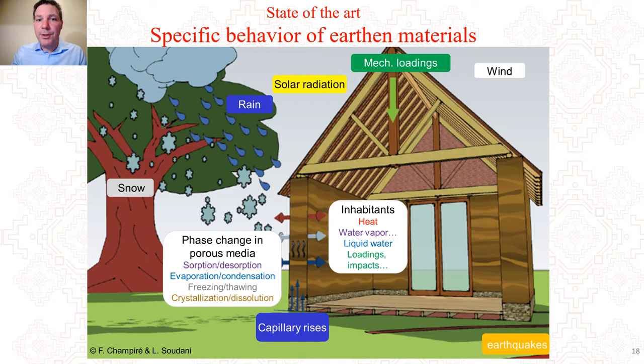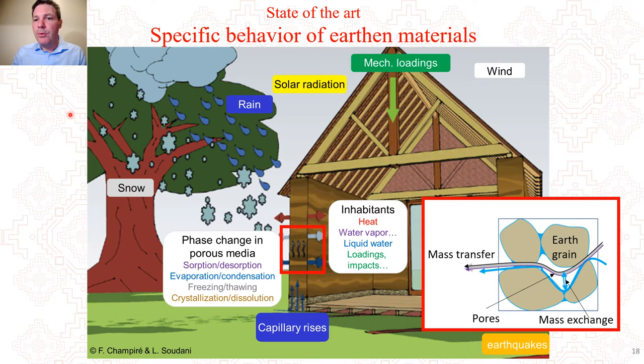The second point is the specific behaviour of earth material. Earth is a porous material with very high permeability due to the network of macropores within the material. Due to the presence of clays, the mechanical behaviour is truly dependent on water content, and the material has a very high specific surface area. Due to all these factors, there will be strong couplings within the material: coupling between liquid mass transfer, vapor mass transfer, heat transfer, and mechanical behaviour.